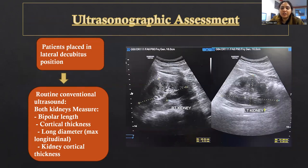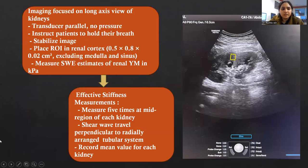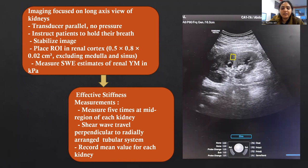For ultrasonographic assessment, patients are placed in lateral decubitus position. We perform routine conventional ultrasound on both kidneys, measuring the bipolar length, the long diameter (maximum longitudinal), and the kidney cortical thickness. Imaging is focused on the long axis view of the kidneys, with the transducer placed parallel. No pressure is applied; patients are instructed to hold their breath. We stabilize the image, place the ROI in the renal cortex excluding medulla and sinus, and measure shear wave elastography estimates of renal Young's modulus in kPa. We measure five times at the mid region of each kidney and record the mean value for each kidney.